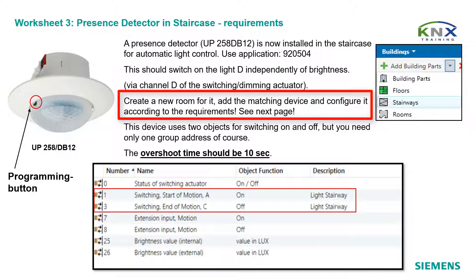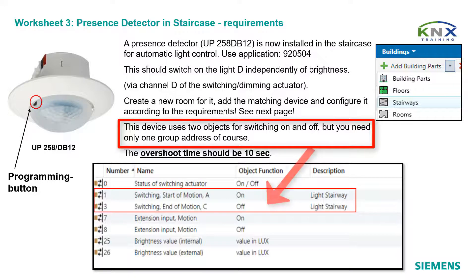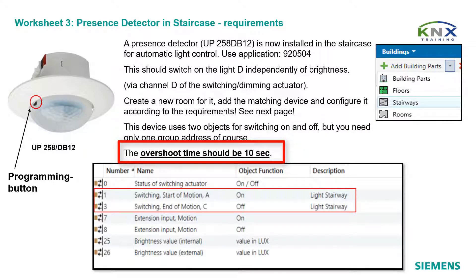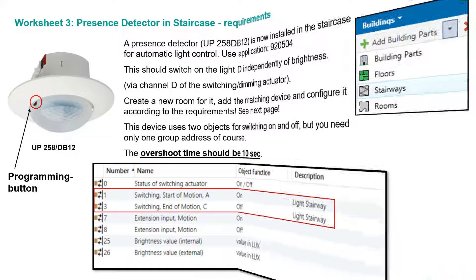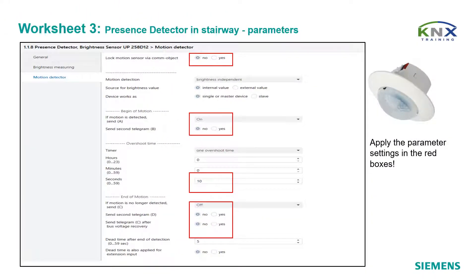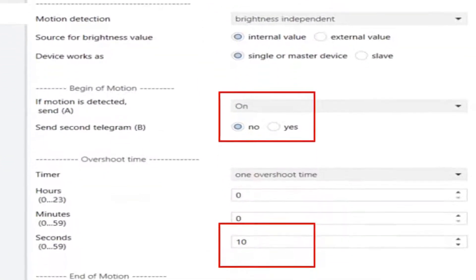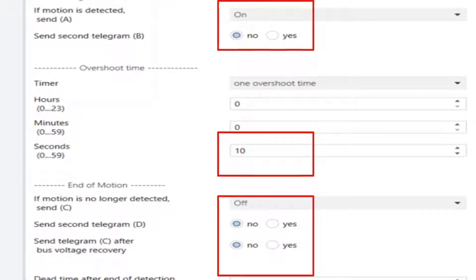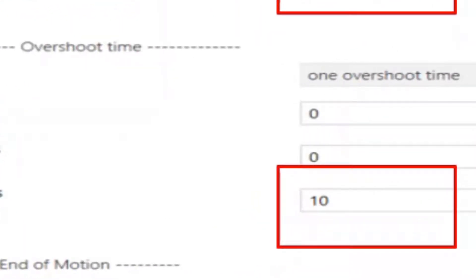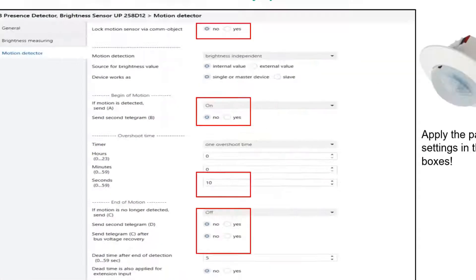Add the matching device and configure it according to the requirement. This presence detector should switch on light D independently of brightness via channel D on the switching dimming actuator. This device uses two objects for switching on and off, but you need only one group address. The overshoot time should be, for practicing only, 10 seconds. Apply the parameter settings in the red boxes: no lock option, settings for begin and end of detection, and the overshoot time of 10 seconds for test purposes.